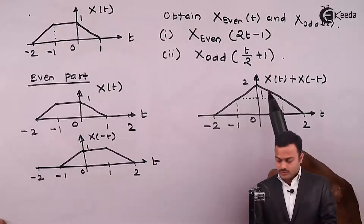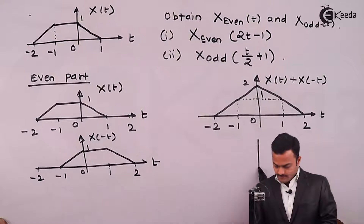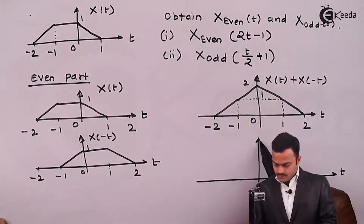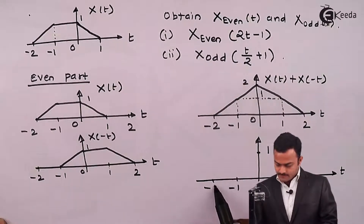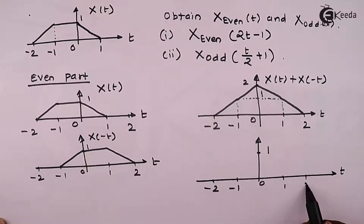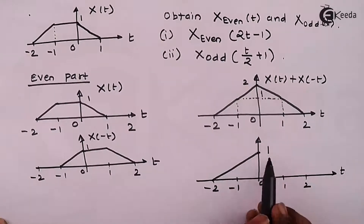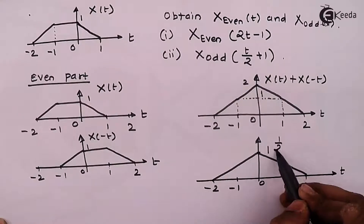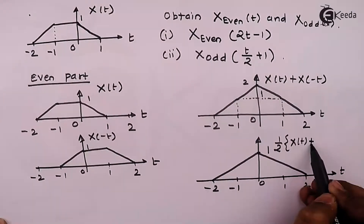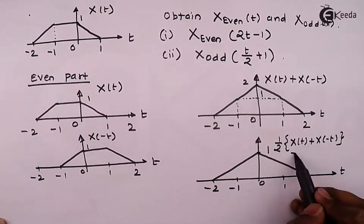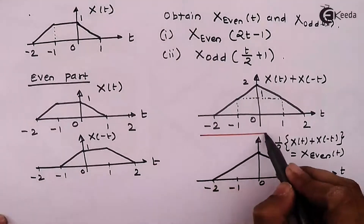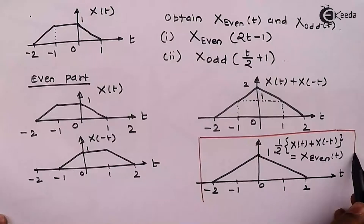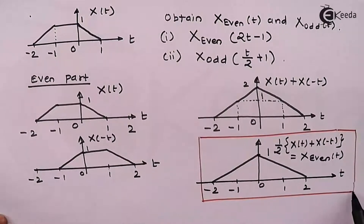But that won't be the even part because we need to divide by two. So in the end, the even part — if I divide by two — instead of two it will be one only, and the rest of the signal remains the same. So this is one half of x(t) plus x(-t), which is nothing but the even part of x(t). We obtain the even part. It is symmetrical about the y-axis, so this even part is correct.